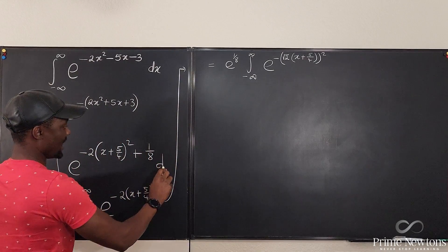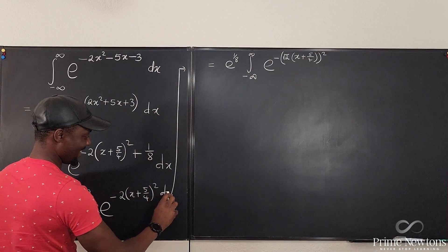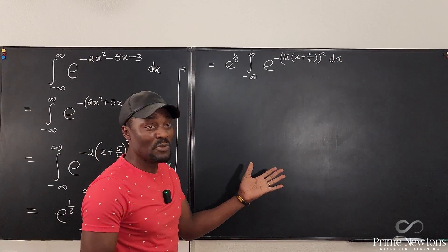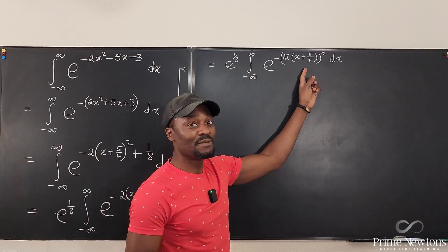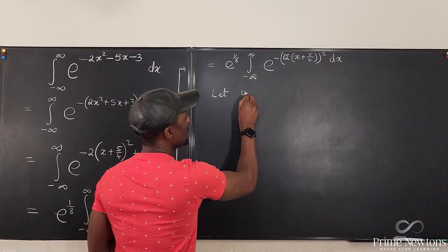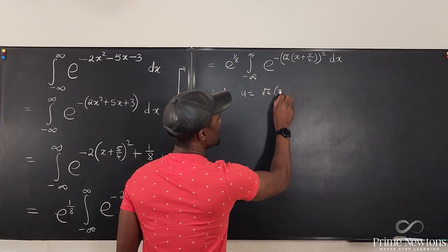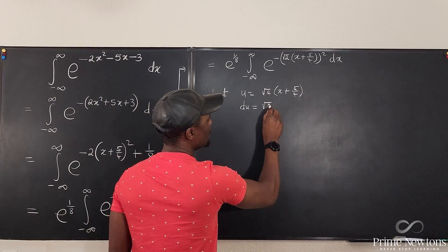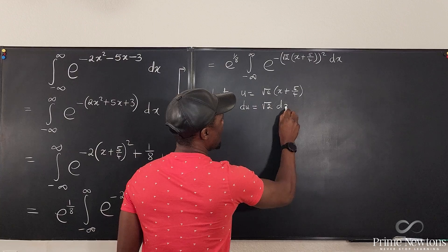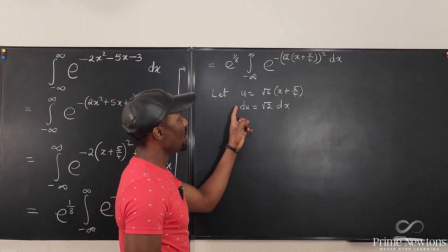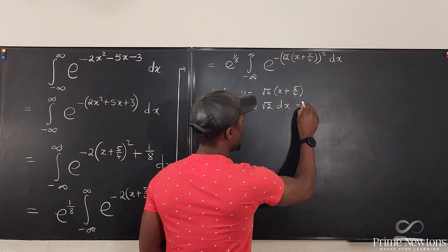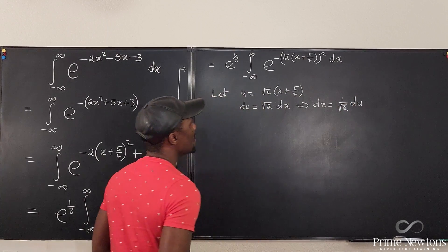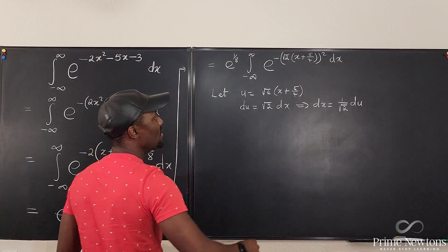Now I make the substitution: let u = √2 · (x + 5/4). Then du = √2 dx, which means dx = du/√2. As x goes to negative infinity, u goes to negative infinity, and as x goes to positive infinity, u goes to positive infinity — so the limits stay the same.